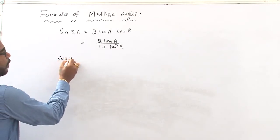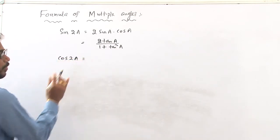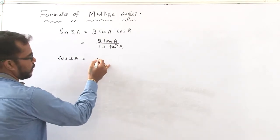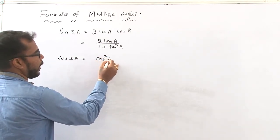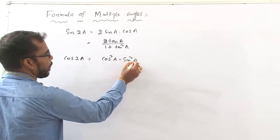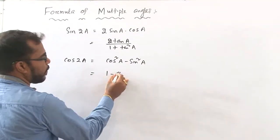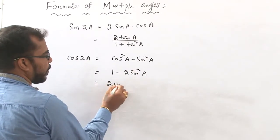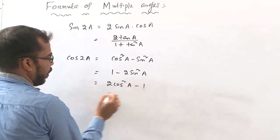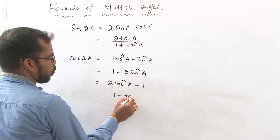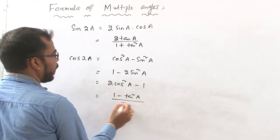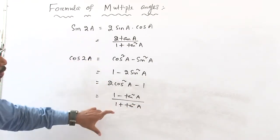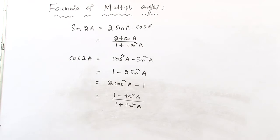Similarly, the formula of cos 2a — there are four formulas of cos 2a. The first is cos square a minus sin square a. The second is 1 minus 2 sin square a. The third is 2 cos square a minus 1. And the last one is 1 minus tan square a by 1 plus tan square a.